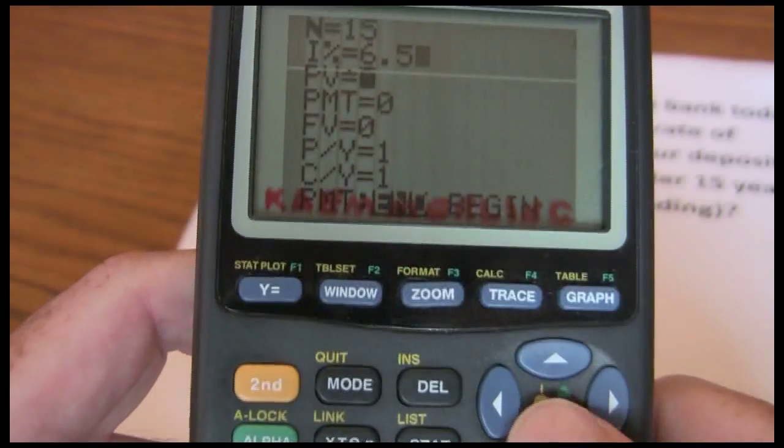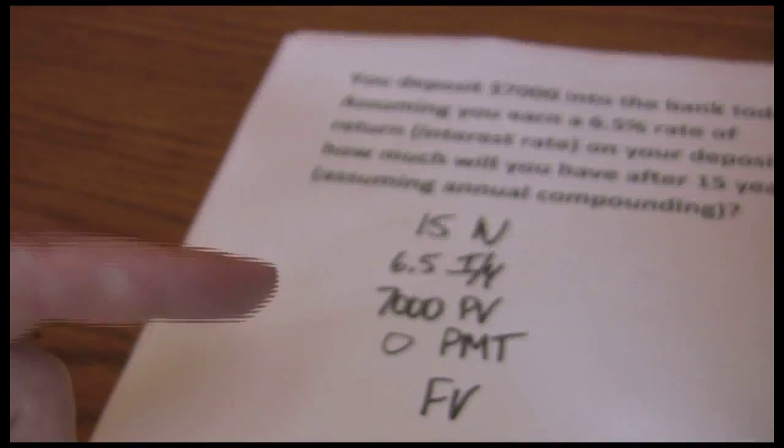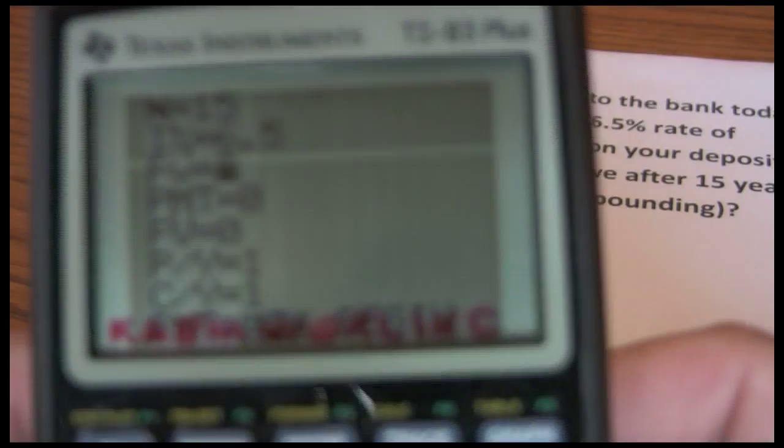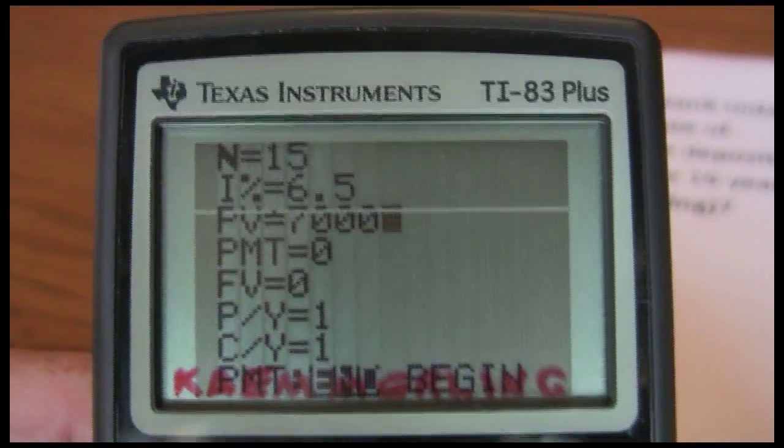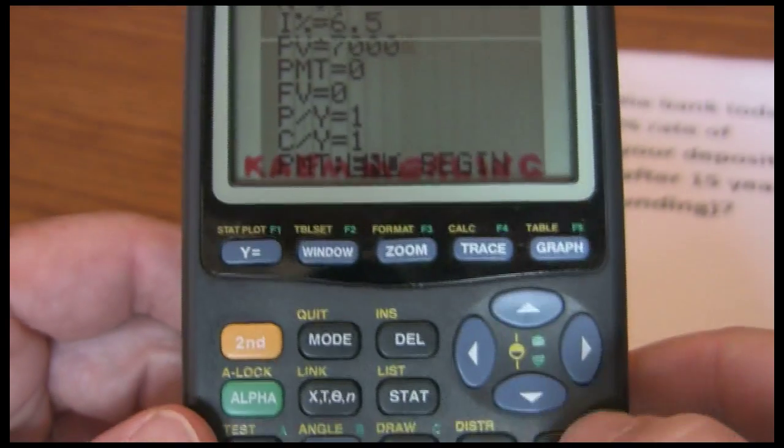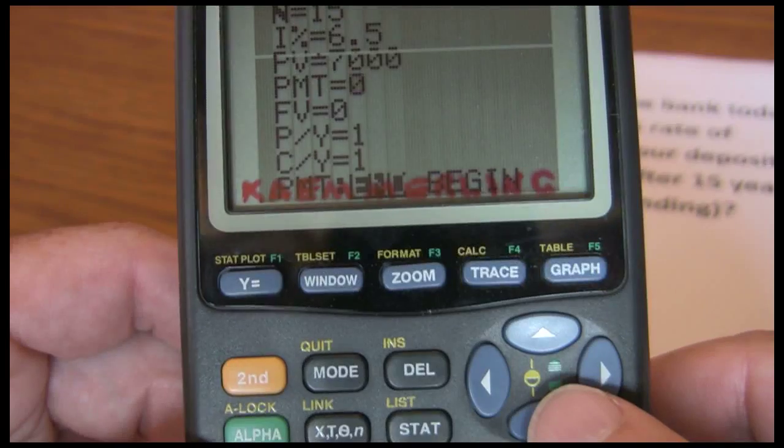Use the arrow to go down to our present value, which is 7,000. Go down. Payment was just zero.